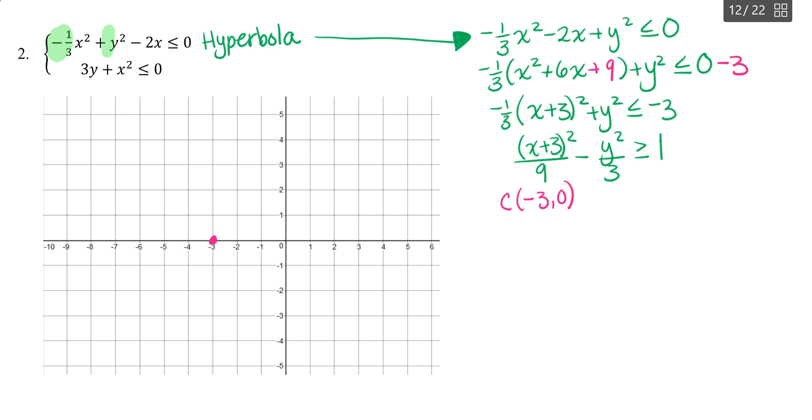So graphing negative three zero, we know that our a value is equal to three since our positive denominator is the a squared. We also know that the b value is equal to the square root of three, which is approximately 1.7 for graphing purposes. Our hyperbola is going to be horizontal since the x term is the first term. So my vertices are going to go left and right from my center. From my center, let's go three units to the left and three units to the right. These are my vertices.